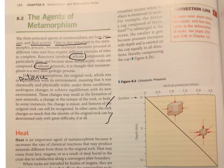These changes may result in the formation of new minerals, a change in the texture of the rock, or both. In some instances, the change is minor. I'll go ahead and underline that. And features of the original rock can still be recognized. In other cases, the rock changes so much that the identity of the original rock can be determined only with great difficulty, if at all.